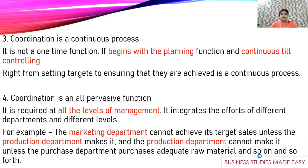Then coordination is a continuous process — it goes on and on. It's not that you have told the workers what is to be done and then you can sit in your AC room. It starts from planning and goes on till controlling. The first function is planning, where objectives are set, and through controlling — which is the fifth function — you ensure that the standards set in planning have been achieved. If there's any deviation, they are removed. Coordination is a continuous process because it runs through all the functions, just like the thread in a garland.